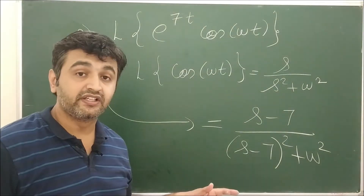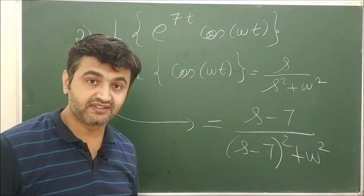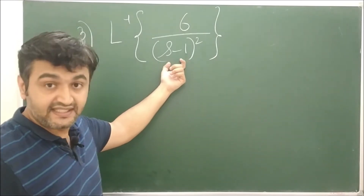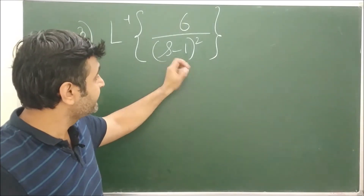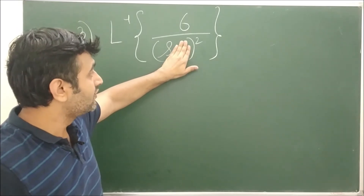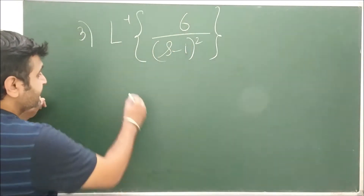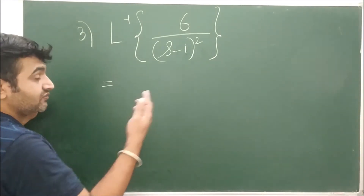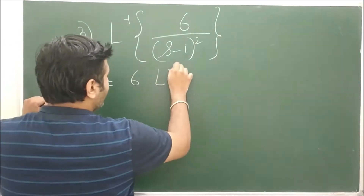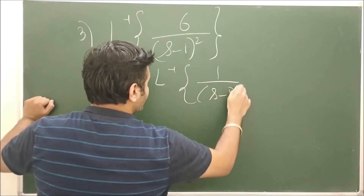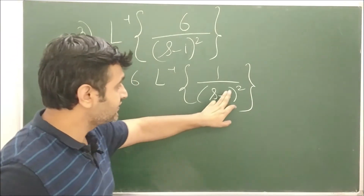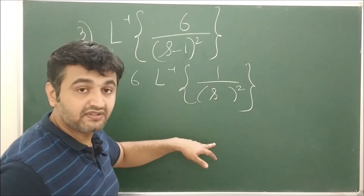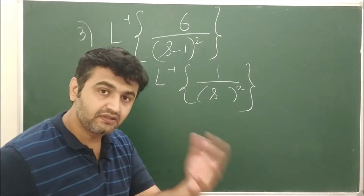Now let's go to the inverse questions. You want to find the Laplace inverse of 6/(s − 1)². You can see there is a shift in s. Whatever shift is there, you ignore it for now, so you have 6/s². Since Laplace and Laplace inverse are linear transformations, the constant 6 can come out. So this is 6 times the Laplace inverse of 1/(s − 1)². If you ignore the shift a = 1, whose Laplace inverse is 1/s²? It is t, because the Laplace of t is 1/s².